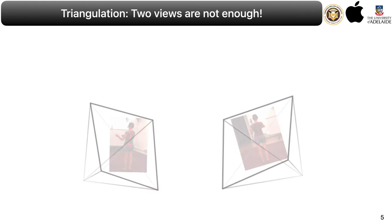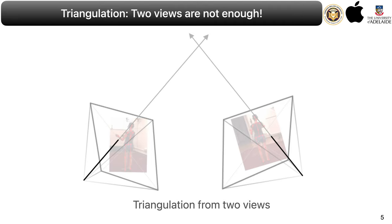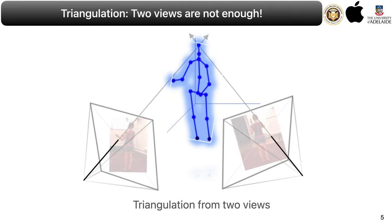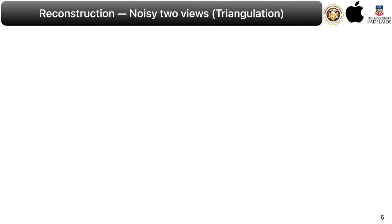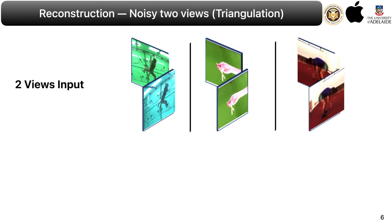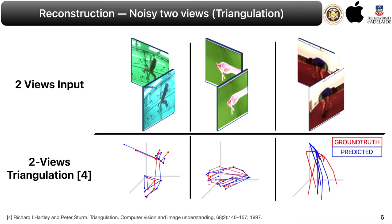In principle, two views should be enough to triangulate each point and reconstruct the 3D structure. However, any imperfections in 2D keypoints or calibration could lead to poor 3D reconstructions, since there are no constraints for reconstructing the points — they could end up arbitrarily anywhere. Due to this reason, two views are insufficient for a robust triangulation approach to accurately reconstruct the 3D structure in the presence of noisy 2D keypoints.